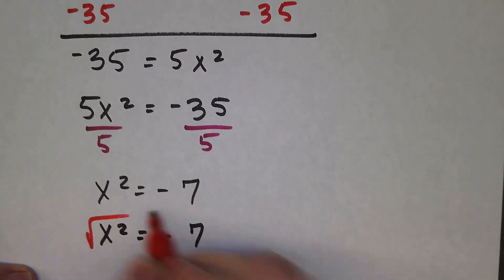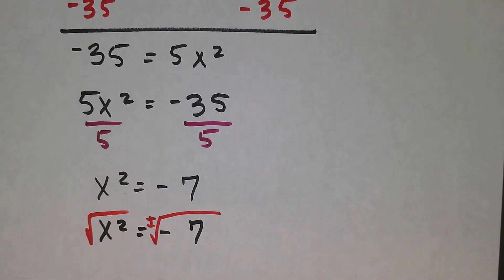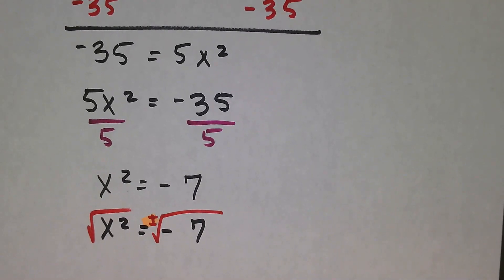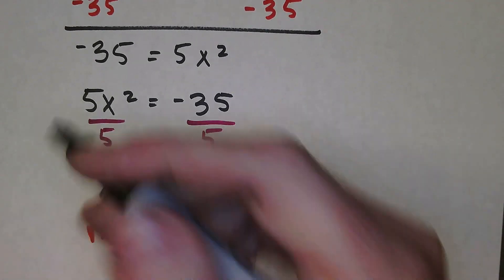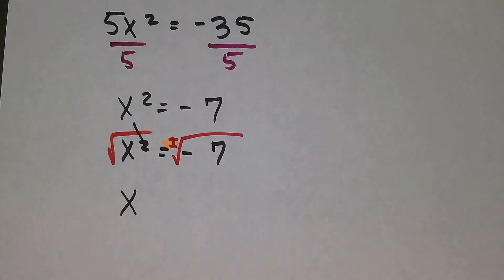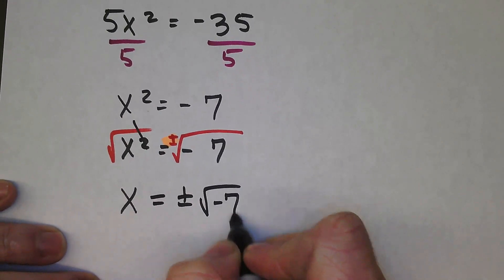I want to undo the square, so I'm going to take the square root. The plus or minus is really important. Anytime you take the square root, it needs to be plus or minus. I didn't write it on one side because it's going to cancel out—it's unnecessary since it's going away.